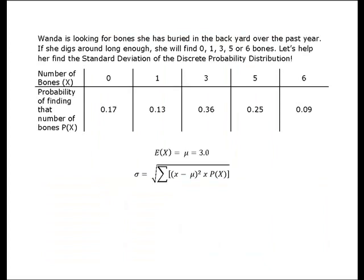Alright, so what we know is that Wanda is looking for the bones that she buried in my backyard over the past year. And we determined that if she digs around long enough, she will either find 0, 1, 3, 5, or 6 bones. So based on this discrete probability distribution, we're going to help her find the standard deviation.